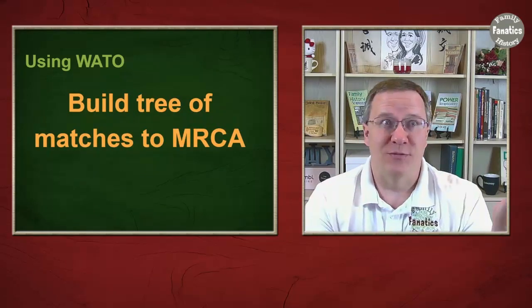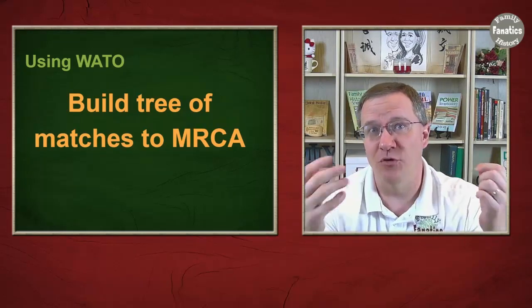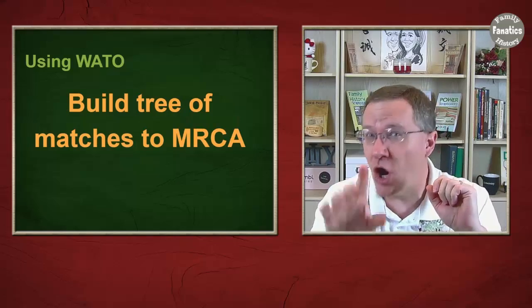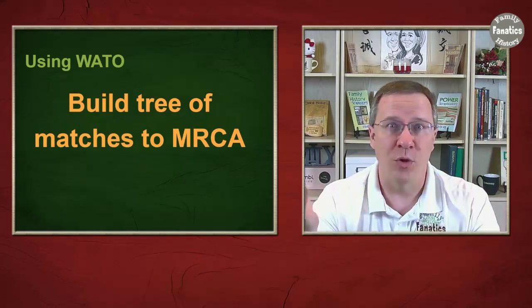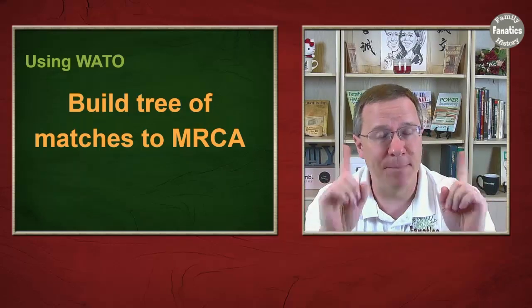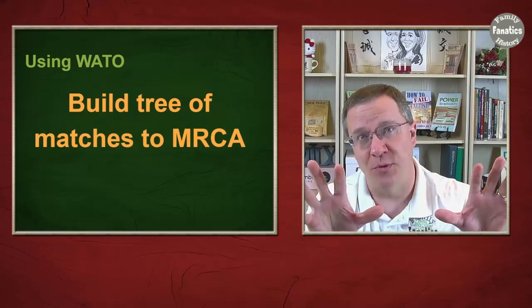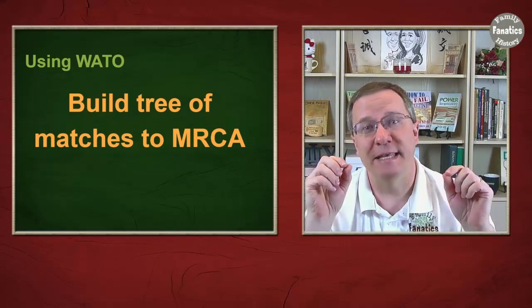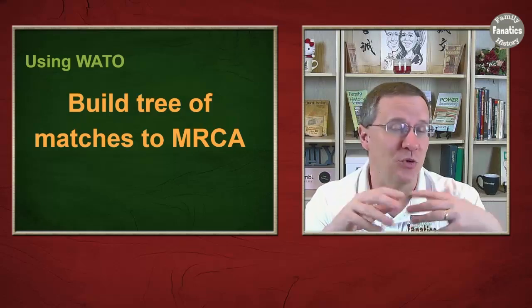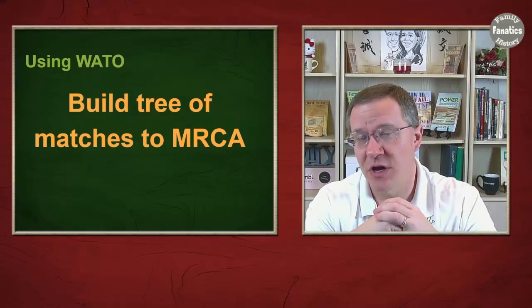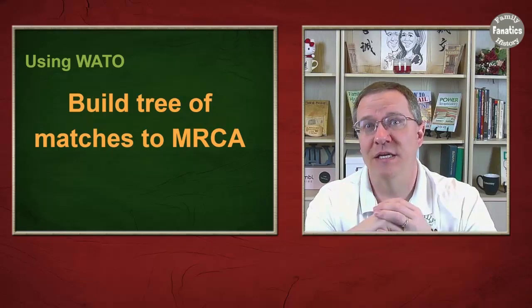Then we get to the really fun part here, and that is building the tree of those matches. Now we're not going to build the tree of the target person because remember, the target person we don't know where they fit into this tree. But because the target person matches all of these people, and if you have the tree information for all of these people back to a recent common ancestor, then your target person should probably be fitting in that tree somewhere.